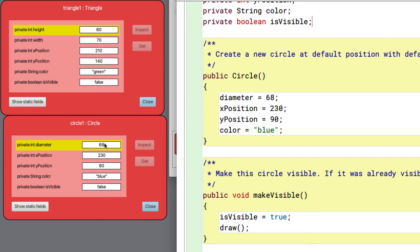68, 230, 90, blue. So the initial state of the circle object arises directly from the source code that's defined inside the circle class.